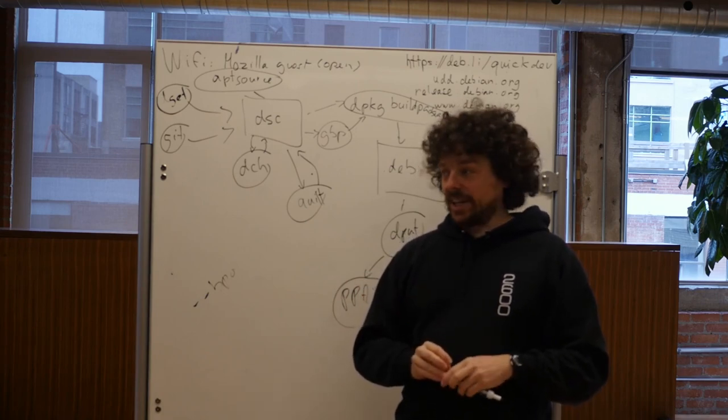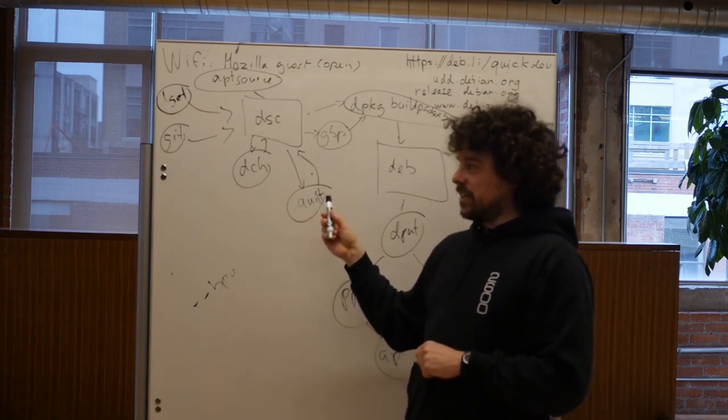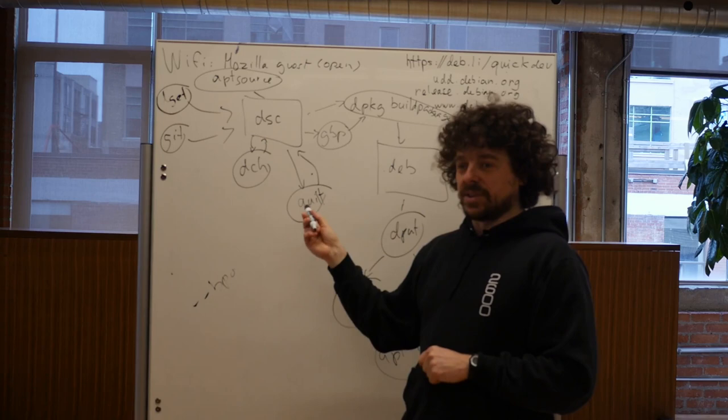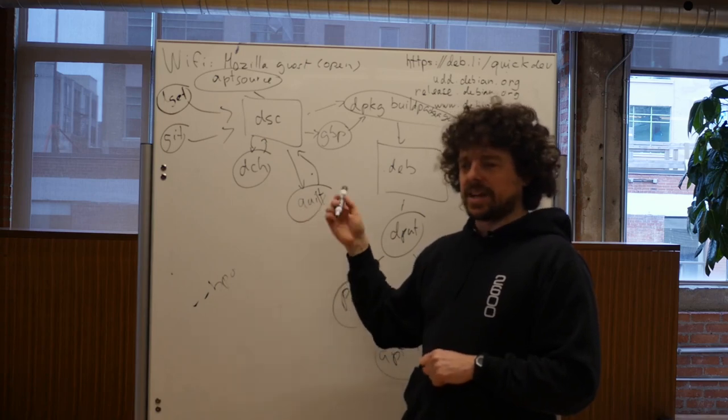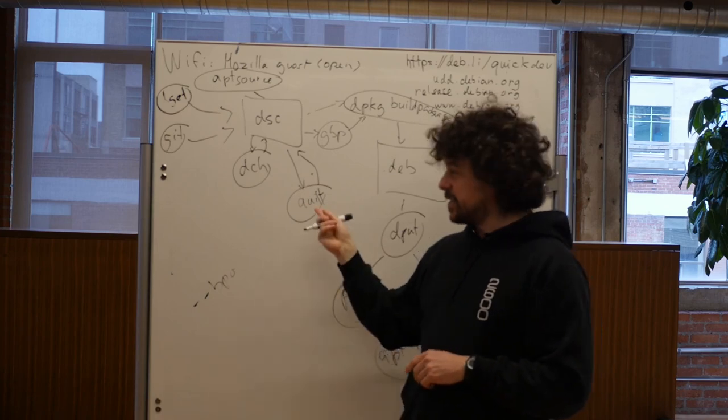That was the way patches were managed in Debian before. Debian packages were effectively a fork of the upstream. And they're still a fork. It's just that at least now the patches are separate and you can see what they are. Before you couldn't really see what they are. And there are still Debian packages that follow that pattern.